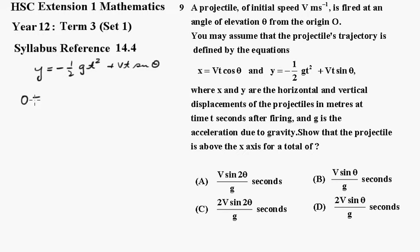So I'll set 0 equals minus a half gt squared plus Vt sin θ. And we'll take t as a common factor and write that as t times minus a half gt plus V sin θ equals 0. So there's the t equals 0 of this one.